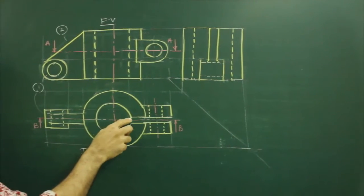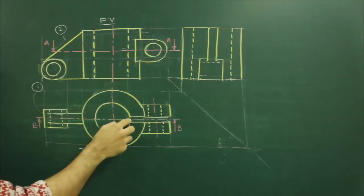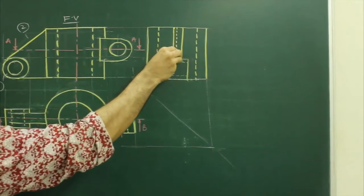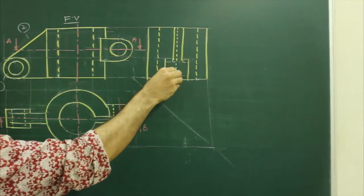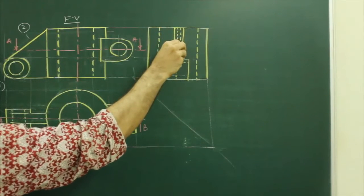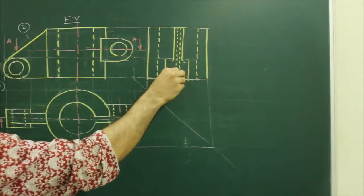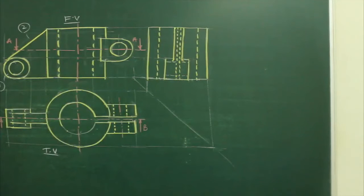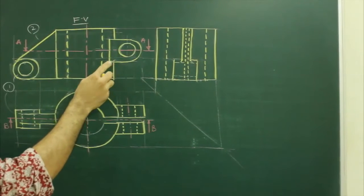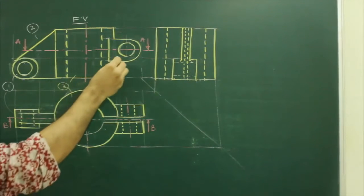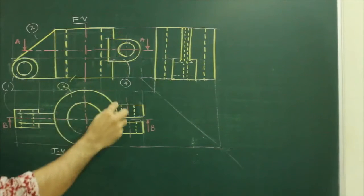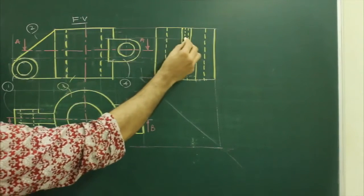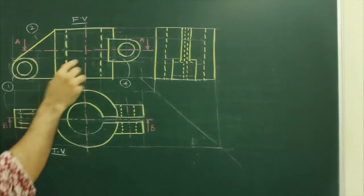Now after this, if you see, there is a slot in this circle. We need to draw that slot also — it will be through and through. See this slot, which is through and through. And after that, this circular blade — this circle was third — then this circular part, which is a circle in one view and a rectangle in the side view. So in this also we will have a rectangle when you project from here. It will be dotted because we won't be able to see this.